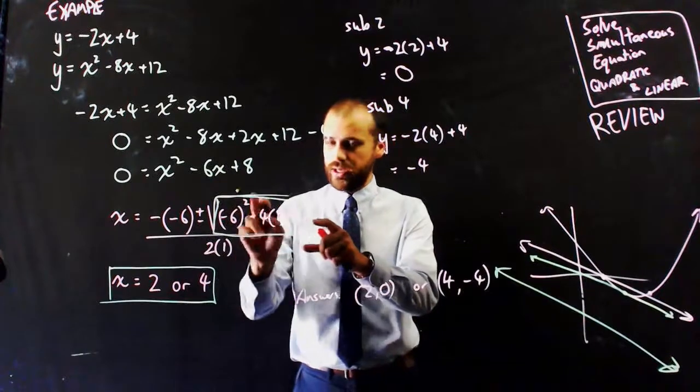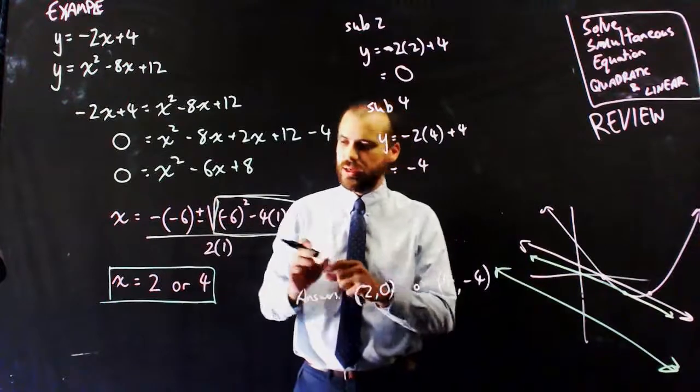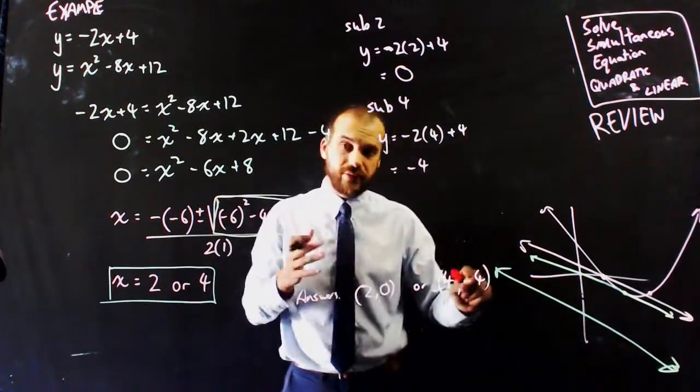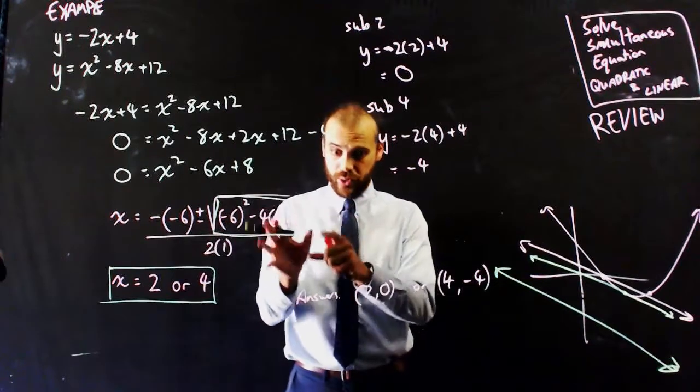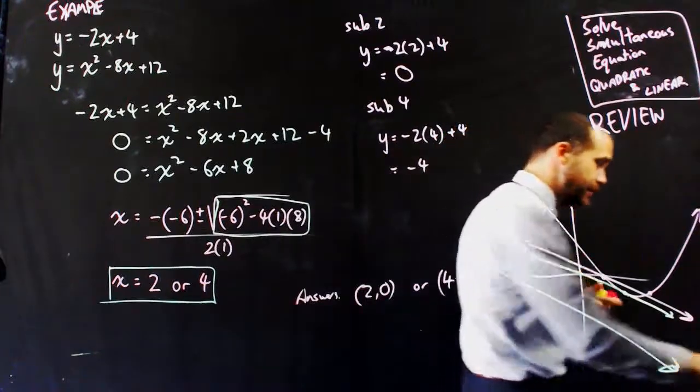If you put it in here and the discriminant equals zero, this bit under the square root equals zero, you're only going to get one answer. And if the discriminant equals a negative number, then you're going to get no answers. Okay, that is solving simultaneous equations using quadratics and linears.